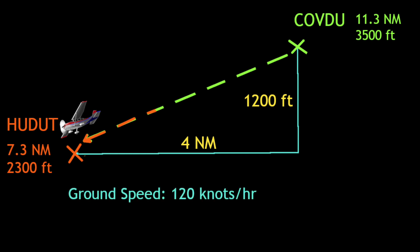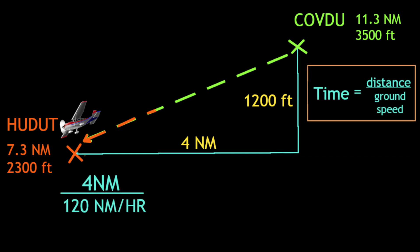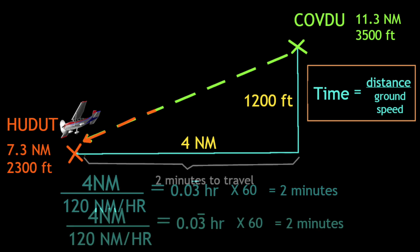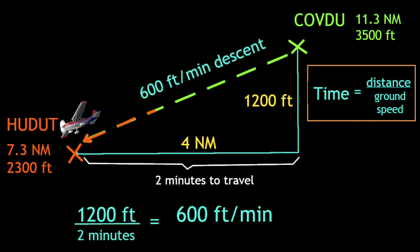Remember in the question we were given a ground speed of 120 knots per hour. We use the basic equation to find the time it will take to travel the horizontal distance of 4 nautical miles. By dividing the 4 nautical miles by our speed of 120 nautical miles per hour, we find that 4 nautical miles will be traveled in 0.0333 hours. Multiplying by 60 gives us exactly 2 minutes to travel across to Hadat. Now that we have 2 minutes to lose 1200 feet, we divide 1200 by 2 and get 600 feet per minute as the required rate of descent.